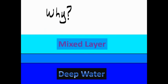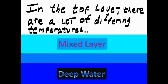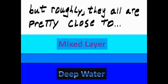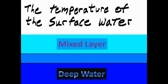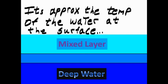Why? These layers are defined by temperature. In the top layer, there are a lot of differing temperatures, but roughly they all are pretty close to the temperature of the surface water. So while consisting of mixed temperatures, it's approximately the temperature of the water at the surface.